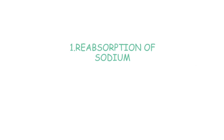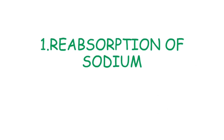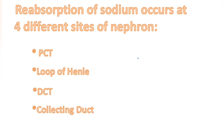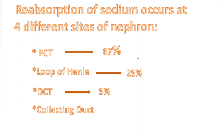The first topic is reabsorption of sodium. Reabsorption of sodium occurs at four different sites of the nephron: proximal convoluted tubule (PCT), loop of Henle, distal convoluted tubule (DCT), and collecting duct. PCT accounts for 67% sodium reabsorption, loop of Henle 25%, DCT 5%, and collecting duct the remaining 3%.